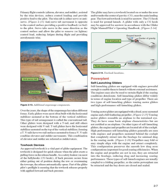Tow Hook Devices. An approved tow hook is a vital part of glider equipment. The tow hook is designed for quick release when the pilot exerts a pulling force on the release handle. As a safety feature, on most of the belly hooks (CG hook), if back pressure occurs from either getting out of position during the tow or overrunning the tow rope, the release automatically opens. Part of the glider pilot's pre-flight is ensuring that the tow hook releases properly with applied forward and back pressure. The glider may have a tow hook located on or under the nose and/or under the center of gravity (CG) near the main landing gear. The forward tow hook is used for aerotow. The CG hook is used for ground launch. A glider with only a CG hook may be approved for aerotow in accordance with the glider flight manual/pilot's operating handbook.